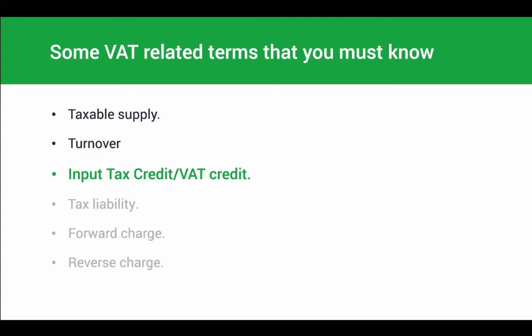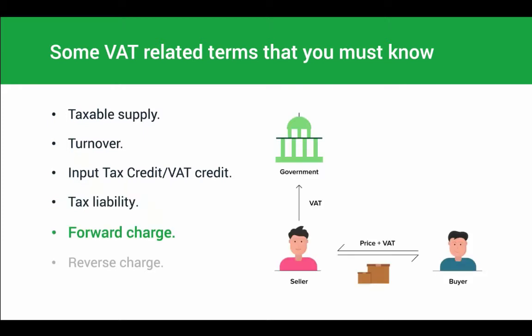Input tax credit, or ITC, is also known as VAT credit. This credit is equal to the amount of tax paid on purchases of goods and services, and can be used to offset the tax you have paid during a particular financial year. For instance, when you purchase an item from a vendor and pay VAT on that transaction, the input VAT paid is offered to you as ITC — you can get it refunded or use the credit to offset your output liability. Tax liability is simply the amount of tax money you owe to the government, calculated based on your sales and purchases including imports and exports.